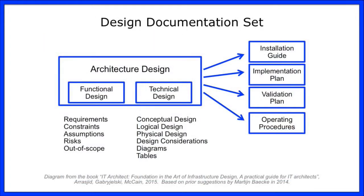The design document area is the last slide. In the architecture design there are two components: a functional design, which is typically part of the conceptual and logical phase, and a technical design that has the actual details of vendor technology, products, and configuration. We also have other documents that may or may not be required: an installation guide, implementation plan, validation plan, and operating procedures. On the implementation plan, that may include training for the team that's going to work on it, timelines, schedules, and different requirements necessary to ensure you can actually do the implementation.